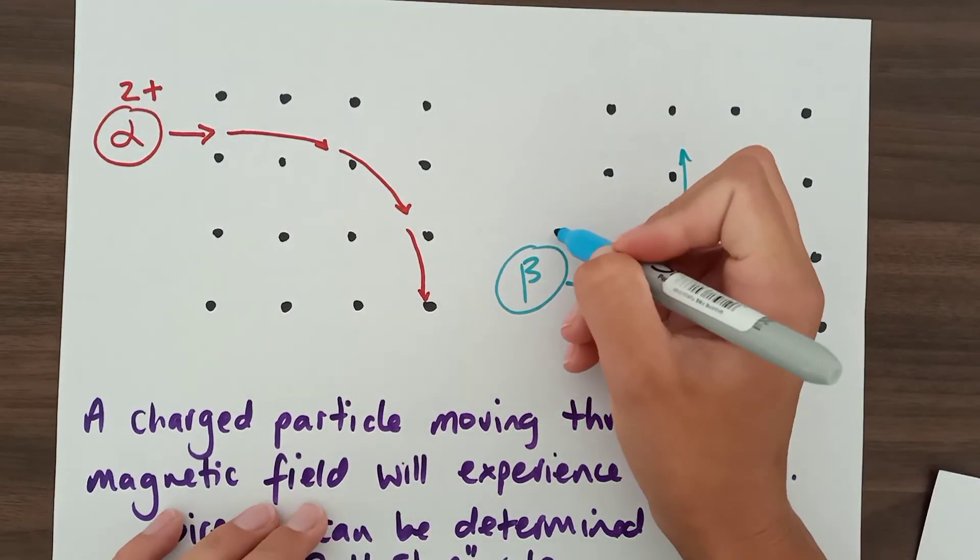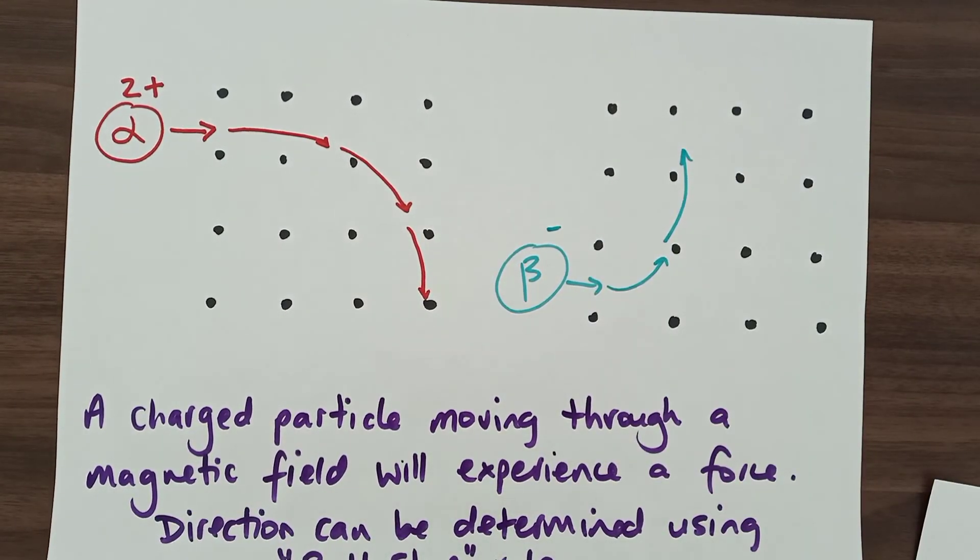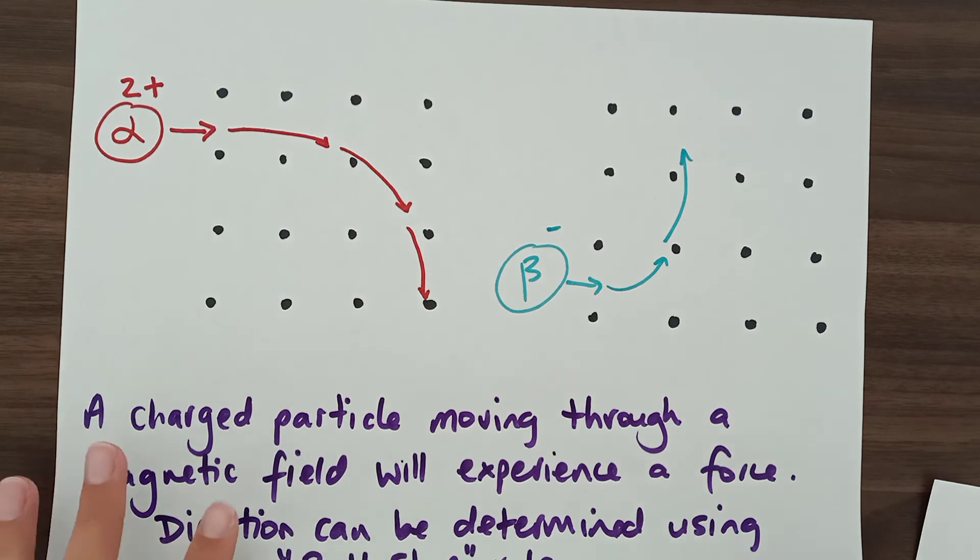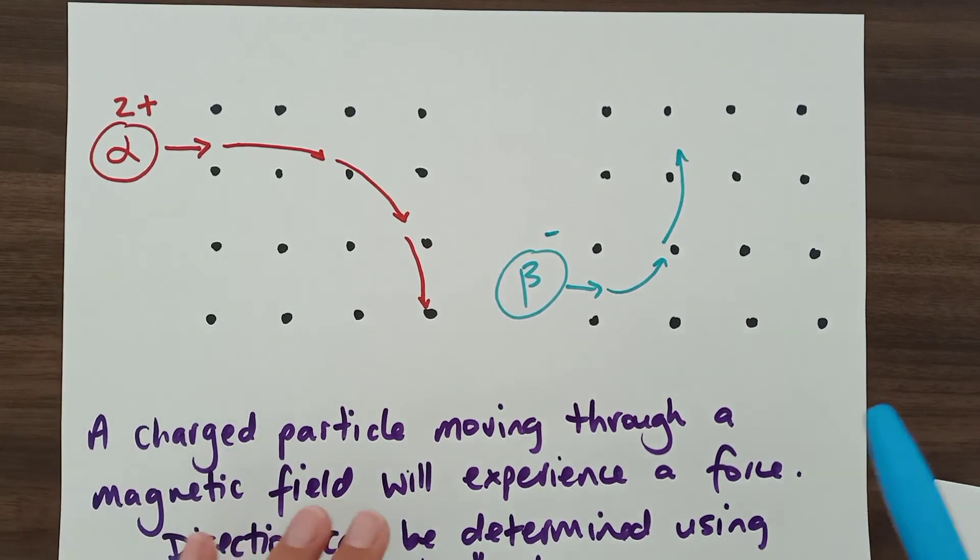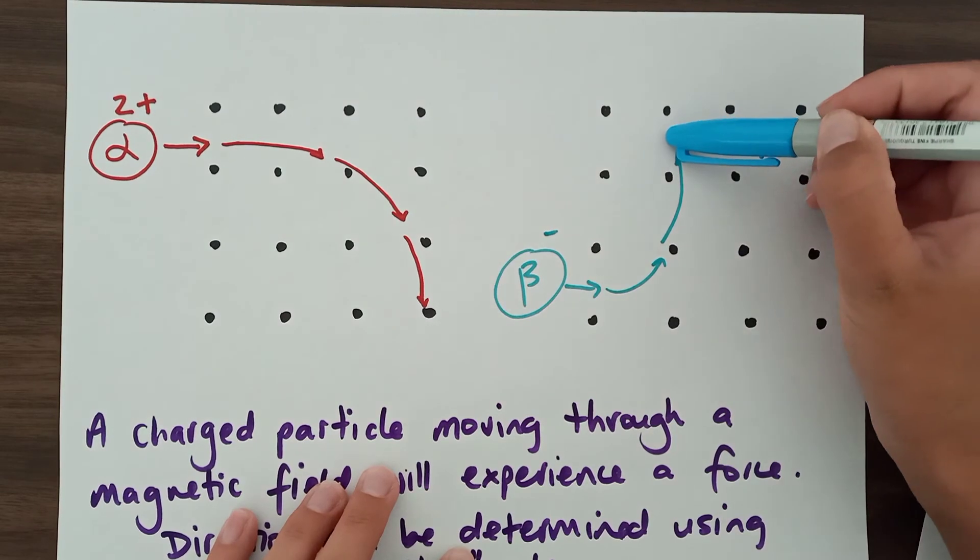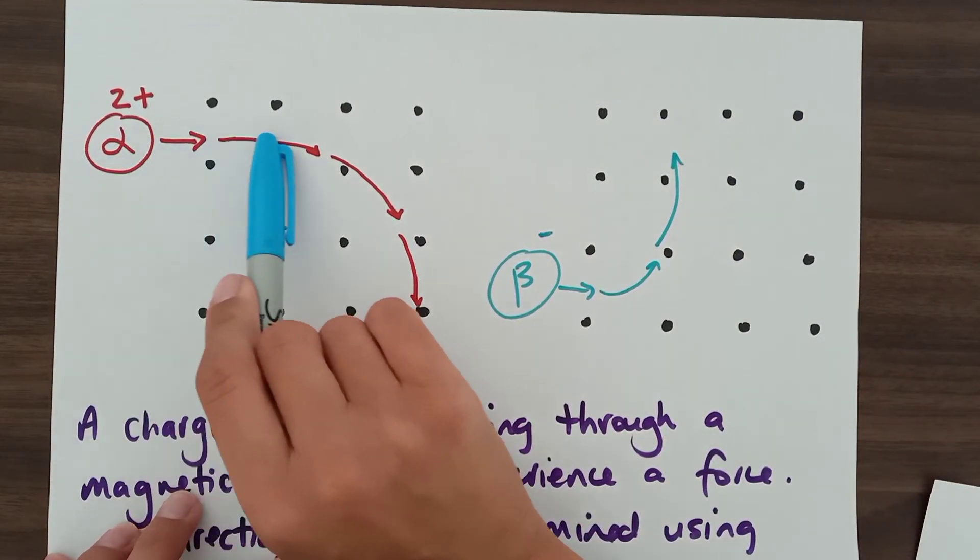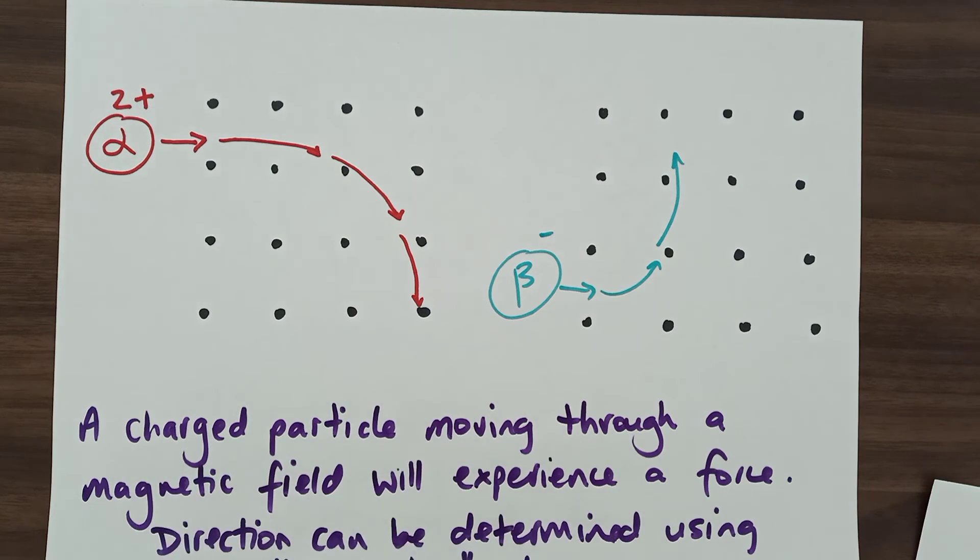Don't forget, a beta particle is very, very small. So it doesn't have very much mass. So any amount of force is actually going to change its motion quite drastically. And that's why we would see quite a steep upwards curve for a beta particle. But a gentle sloping downwards curve for an alpha particle.